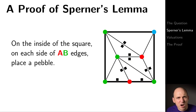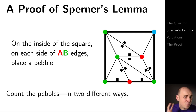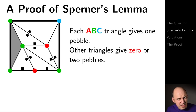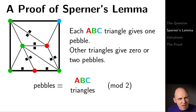Let's prove Sperner's lemma. Our proof is the classic pebble counting proof. On the inside of each triangle, on each side of an AB edge, I'll place a pebble. We're going to count those pebbles in two different ways. Each ABC triangle gives one pebble, but other triangles give either zero or two pebbles. In either case, the number of pebbles is congruent modulo 2 to the number of ABC triangles.